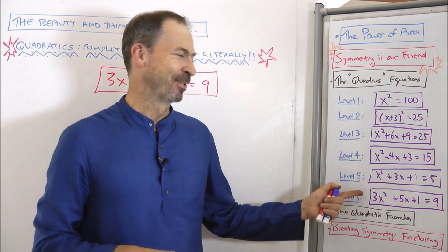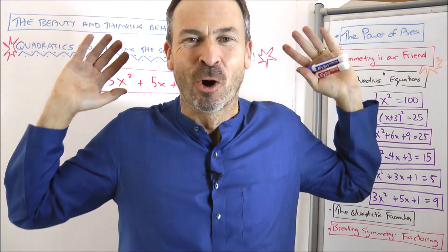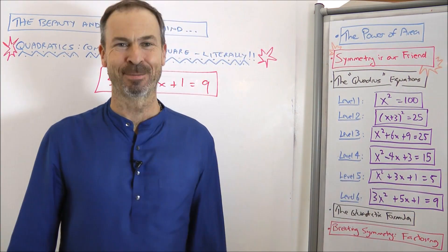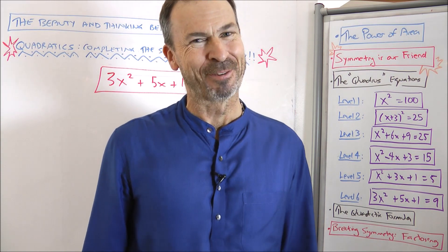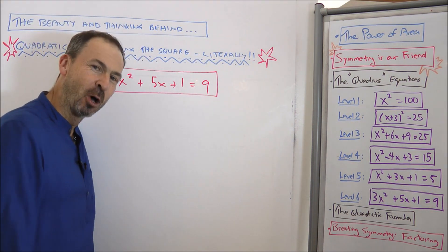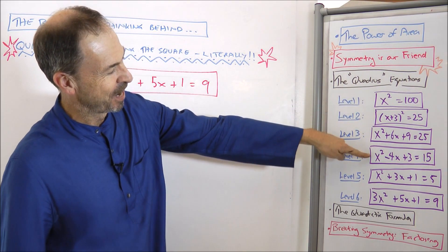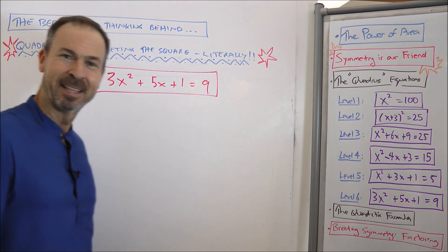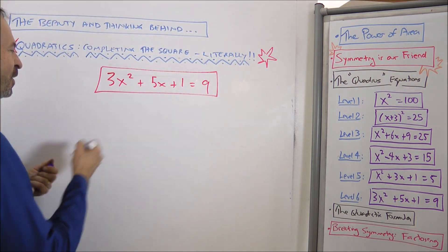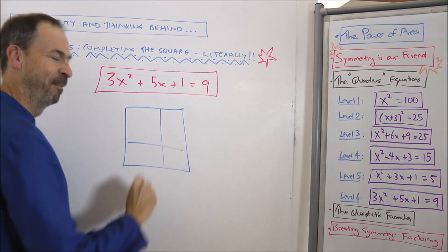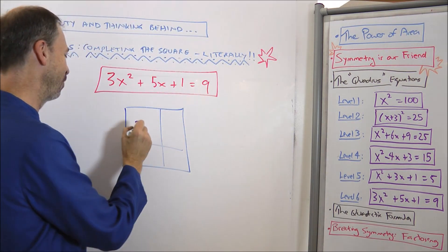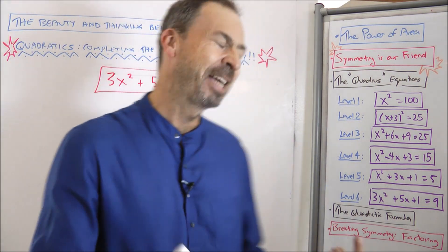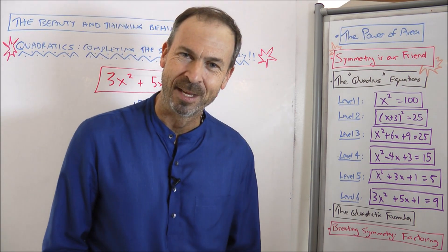We're finally at level 6. This is the ultimate level. If you can solve this one we're about to do now, we can do any quadratic whatsoever just by using the power of area and symmetry. You'll notice that in every example so far, I've had just a single x squared. But now I've got a number in front of the x squared, and that's a complication. If I have a 3x squared, I kind of want root 3x and root 3x, which I can make work, but it just won't be fun.